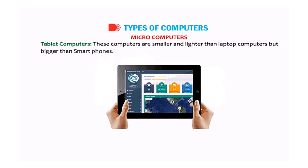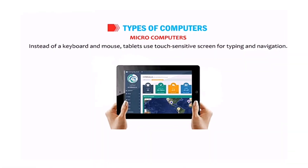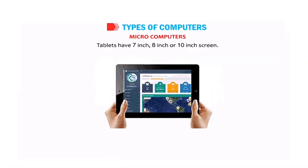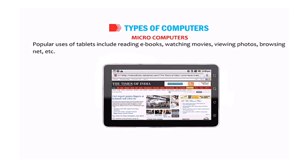Tablet computers are smaller and lighter than laptop computers but bigger than smartphones. In place of a keyboard and mouse, tablets use touch-sensitive screens for typing and navigation. Tablets are usually found with 7 inch, 8 inch, or 10 inch screens, and can be used for reading eBooks, watching movies, viewing photos, and browsing.